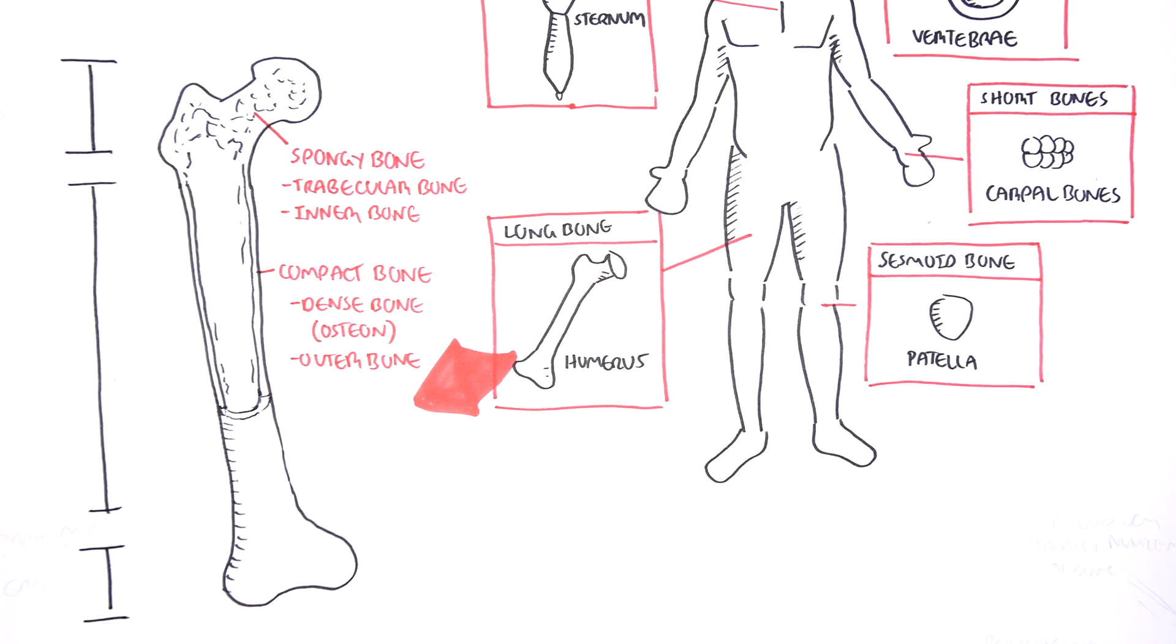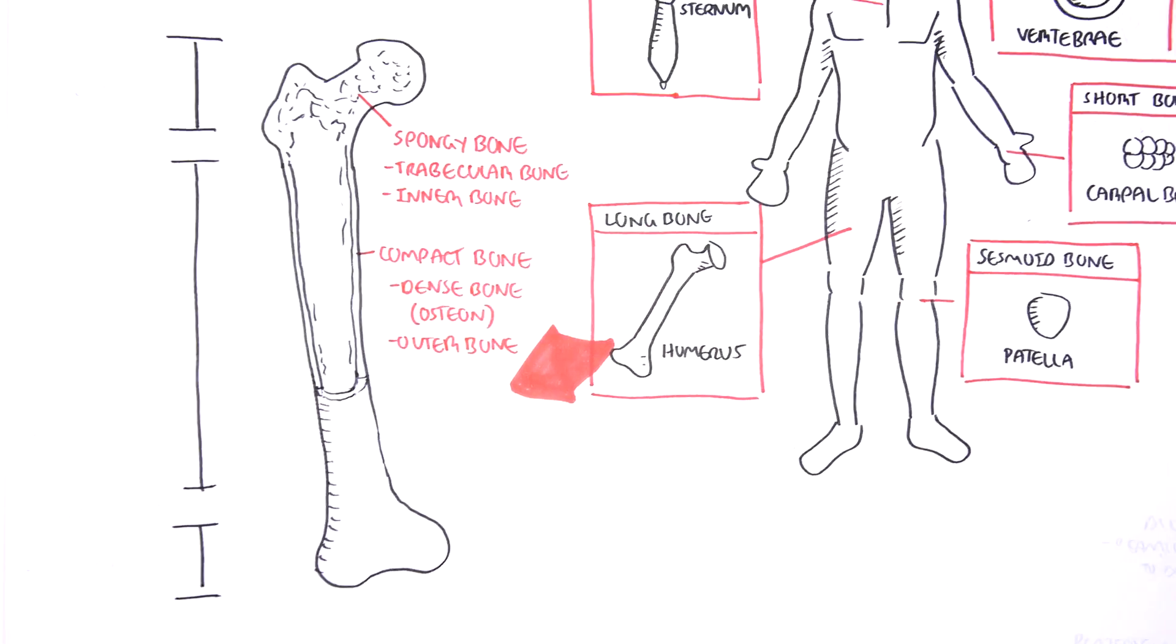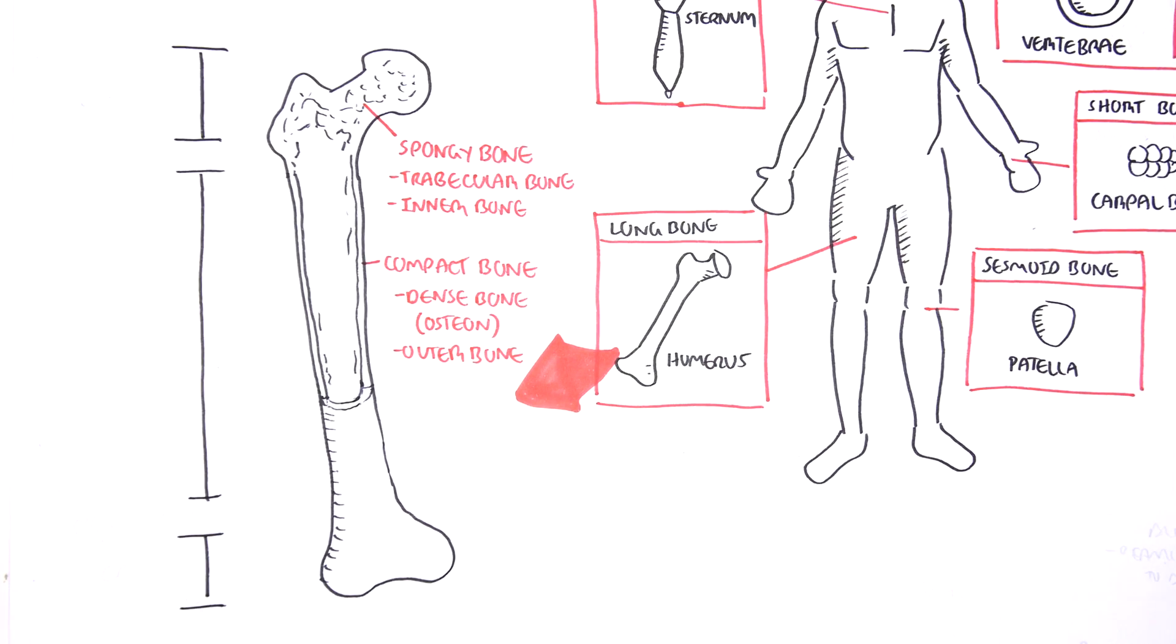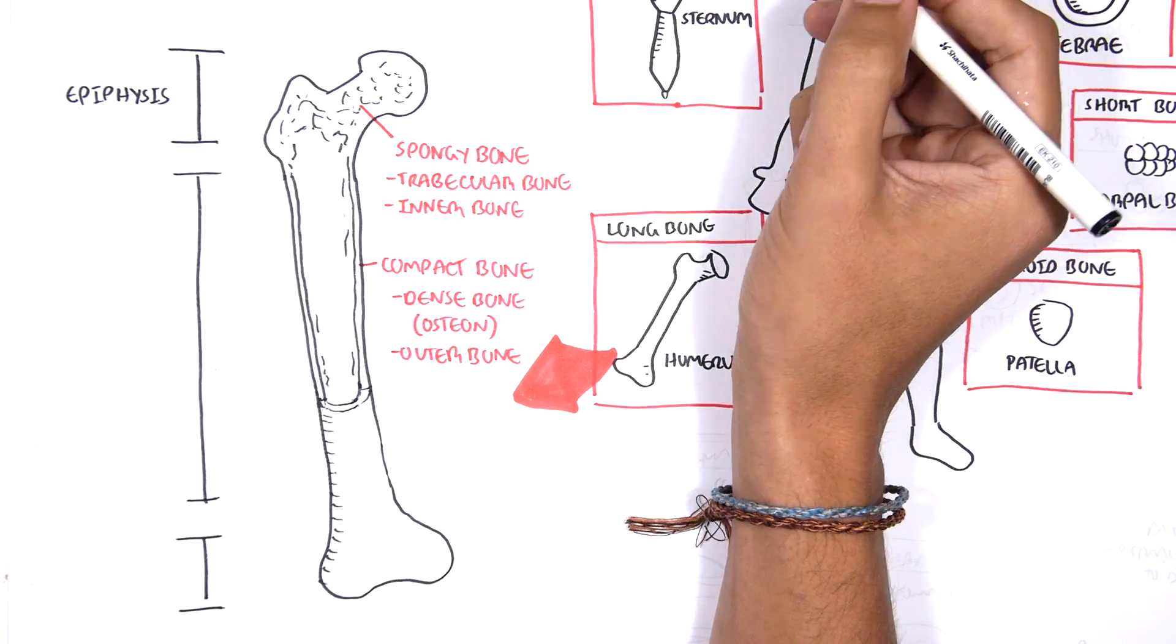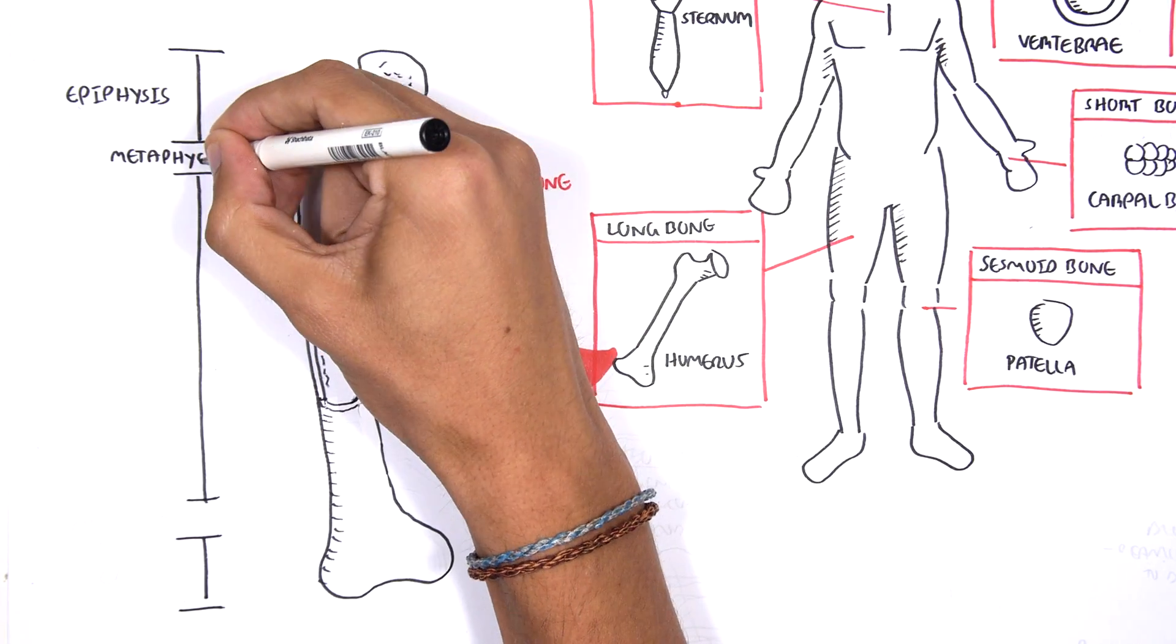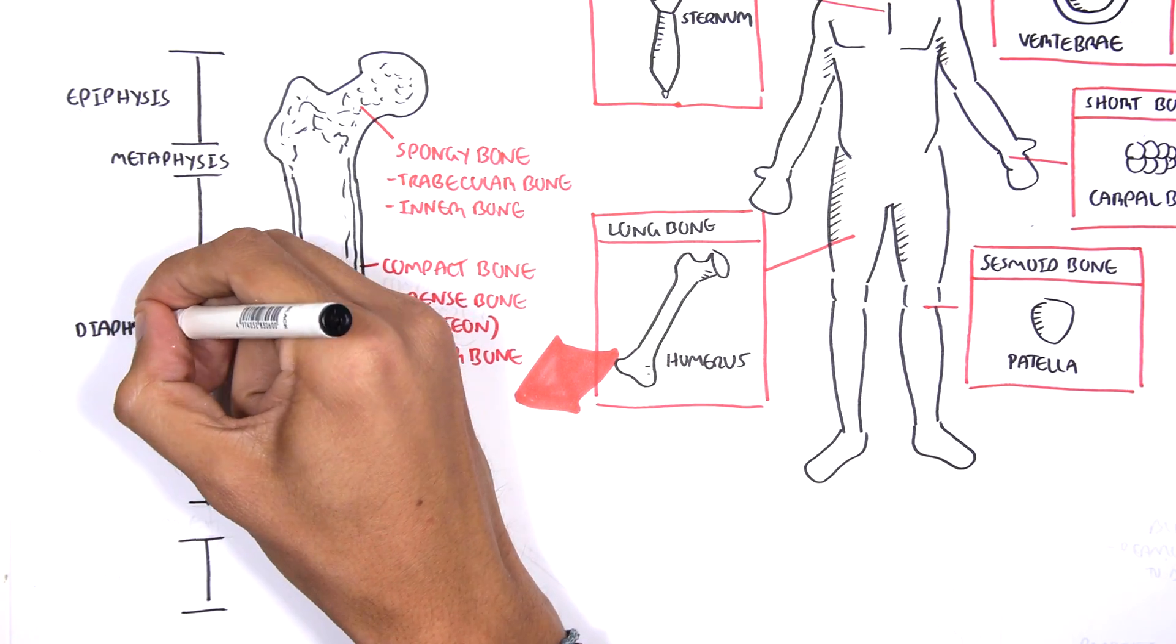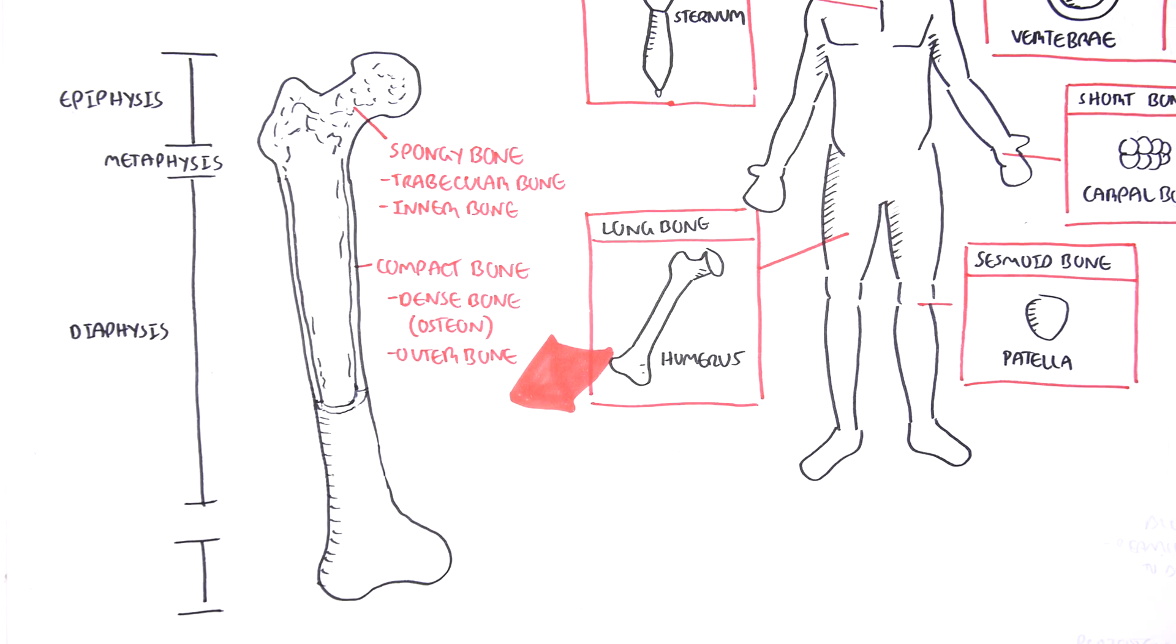The long bones, such as the humerus, have different sections. The very ends of the long bone is the epiphyses, then the metaphyses, which separate the ends of the long bone to the center of the bone. The center of the bone, the bone shaft, is called the diaphyses.